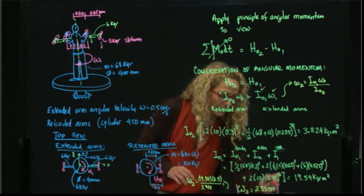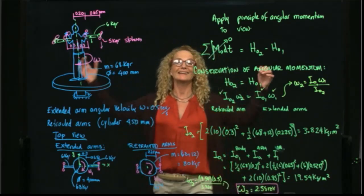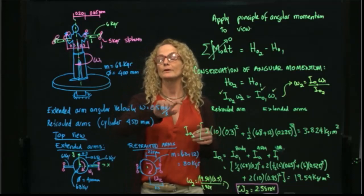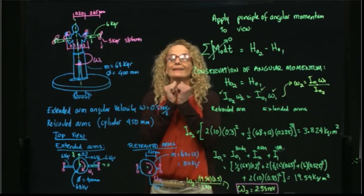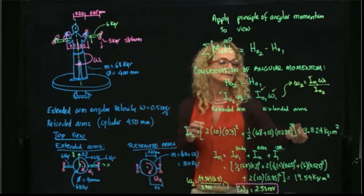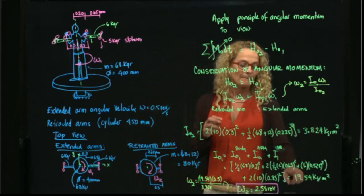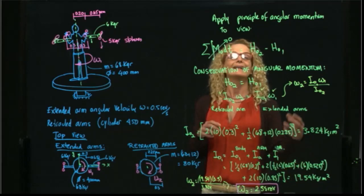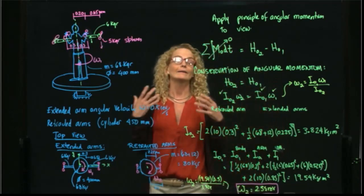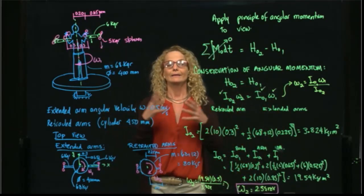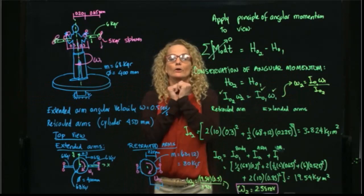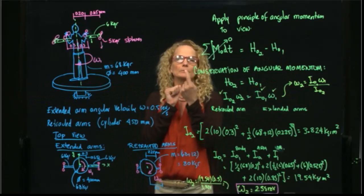In conclusion, when the person had the arms extended, he was spinning at 0.5 revolutions per second. As soon as he decreased the mass moment of inertia by retracting the arms, the velocity increased to 2.55 revolutions per second. The difference in mass moment of inertia is compensated by the angular velocity. This is the same principle that dancers and ice skaters use — when they contract their arms, they spin much faster.